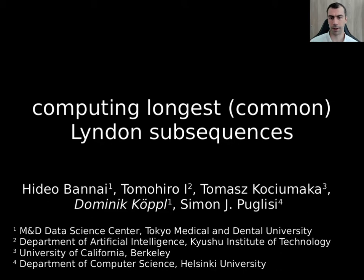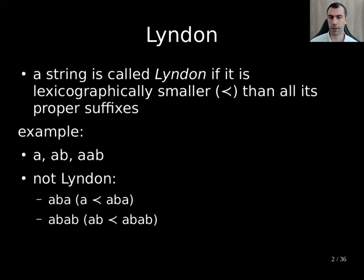Let us briefly explain and review what Lyndon means. A string is called Lyndon if it is lexicographically smaller, denoted by this smaller symbol, than all its proper suffixes. For instance, 'a,a,b' and 'a,a,b' are Lyndon, but not 'a,b,a' or 'a,b,a,b', because here in particular we have a border — meaning that this is a string that is both suffix and prefix — and a border is always lexicographically smaller than the entire string itself.